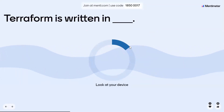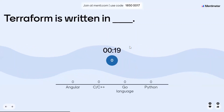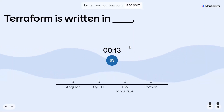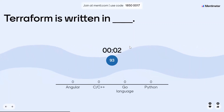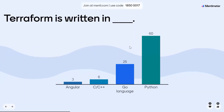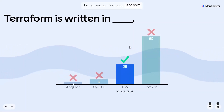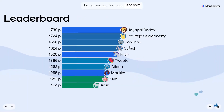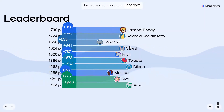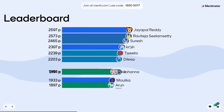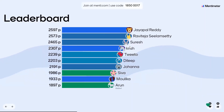Terraform is written in — okay — Go language. Jaypal, Raviteja, Johan, Suresh. Okay, next question.